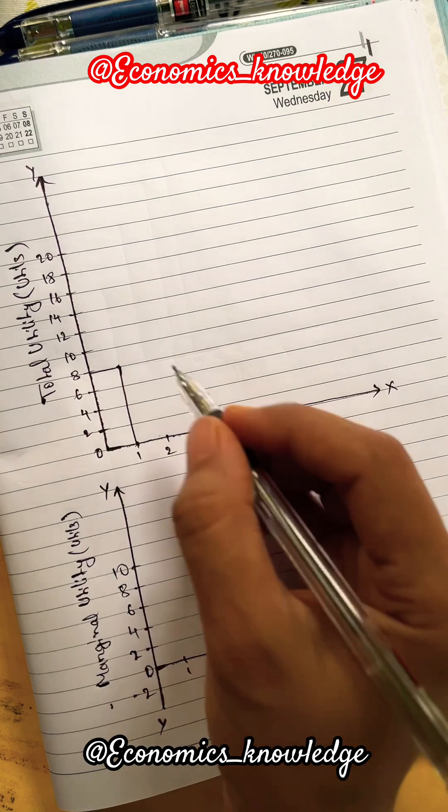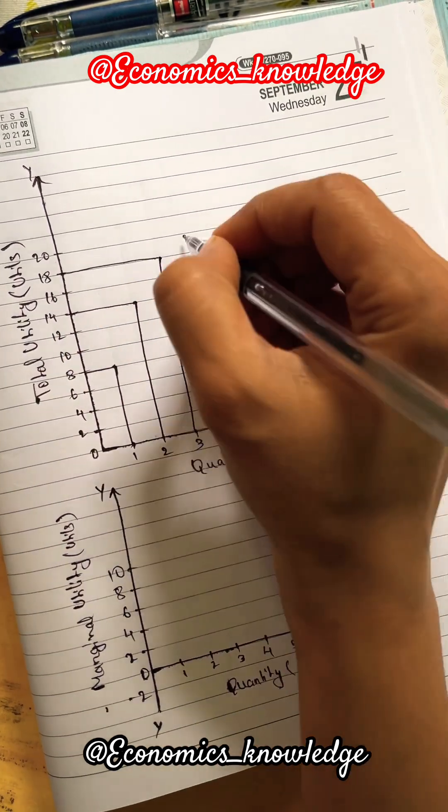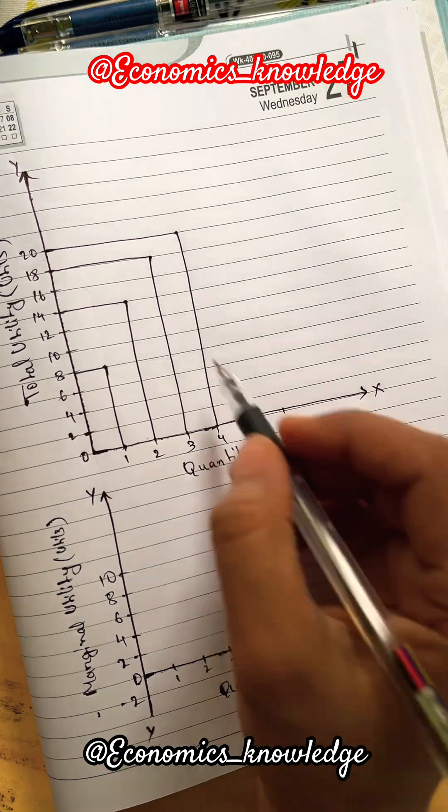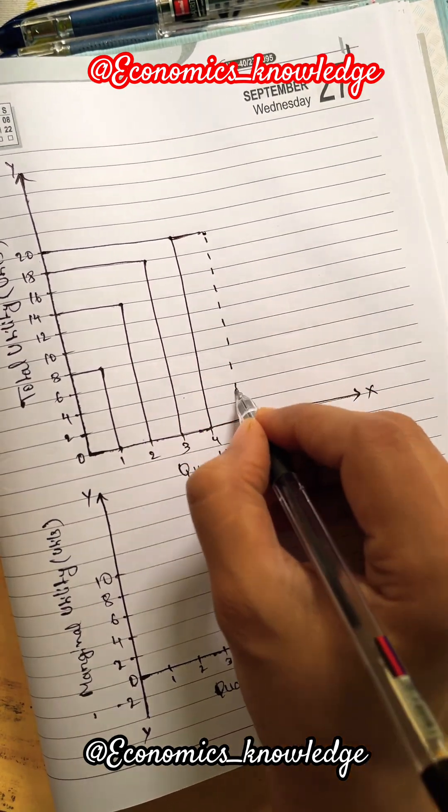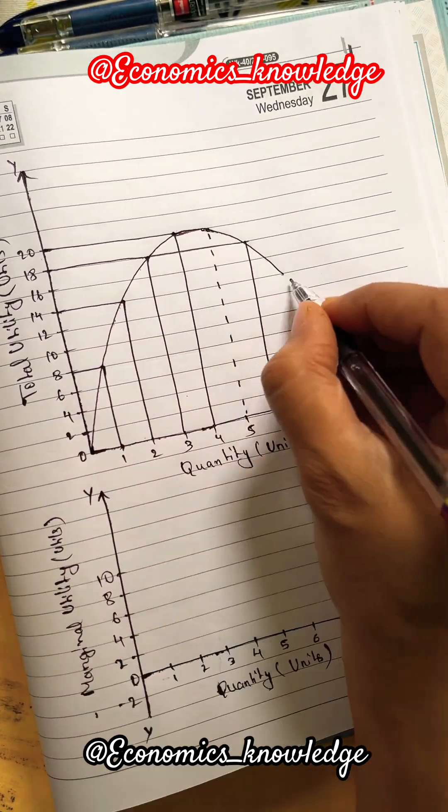Now we will put the values in the diagram so that we can get total utility and marginal utility curve. First, we will put the total utility and quantity combination in the diagram. By joining all the points, we will get the total utility curve.